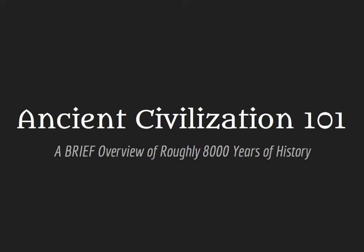Before we can really delve into the earliest content for the AP World History Modern course, it's important to have some foundational knowledge of the historical events, developments, and processes that led to what human civilization looked like in 1200 CE. The purpose of this mini-lesson is to provide that brief overview before we delve a little more deeply into a few of these developments.